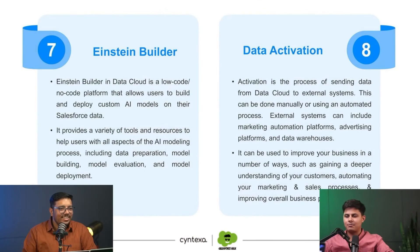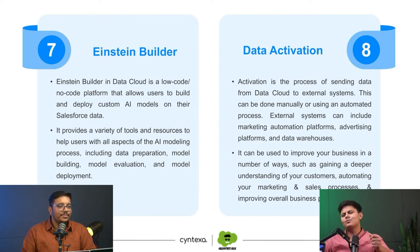Then comes Einstein Builder, which is a low-code and no-code platform that allows users to deploy custom AI models. For example, AWS SageMaker can be used to create an AI model which can then be integrated with Salesforce Data Cloud to make predictions — that's what Einstein Builder is. Then comes data activation. Data activation simply means sending that information to different other platforms. So data activation is just sending data from Salesforce Data Cloud to other platforms.